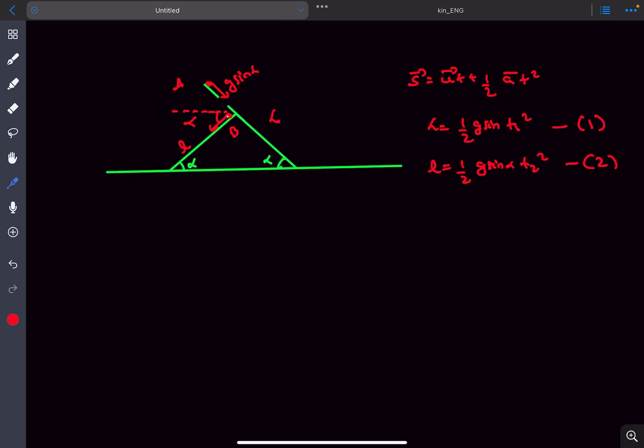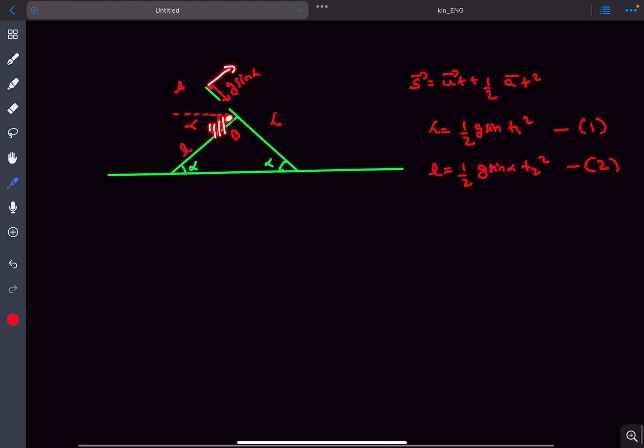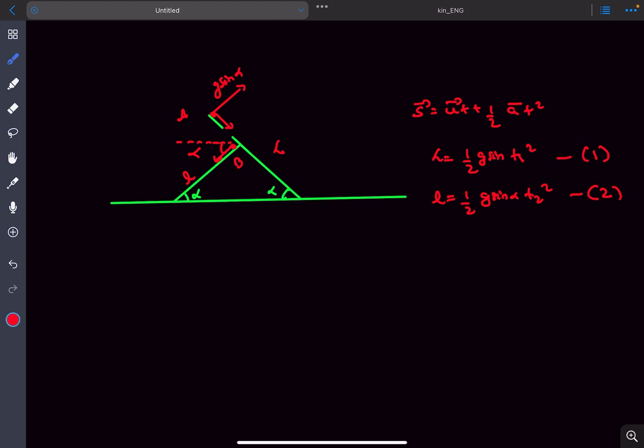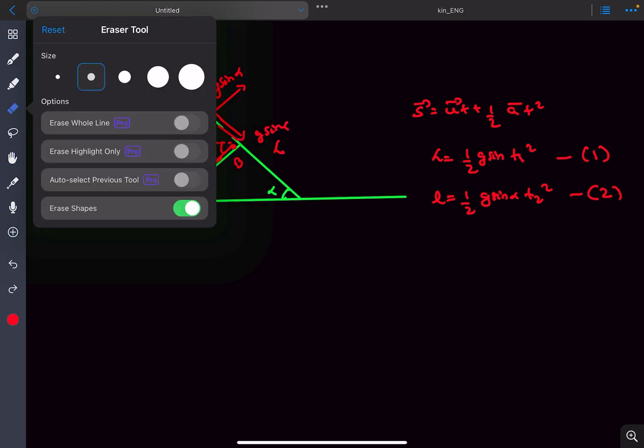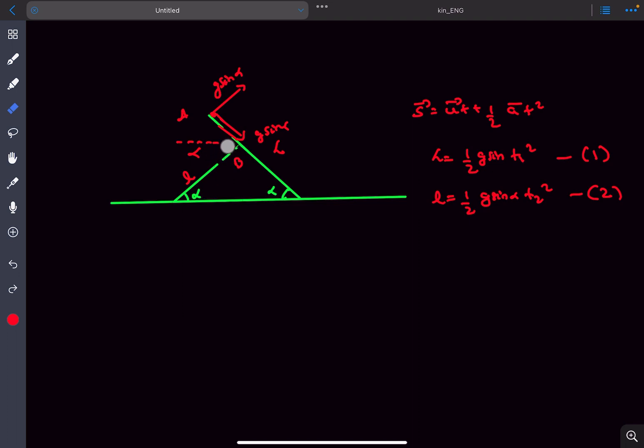Let's take B as a frame of reference. For that, we reverse this acceleration and add it to A. Both are equal in magnitude, so this would be g sin alpha as well, and now the net acceleration of B is zero.